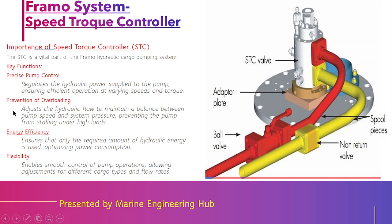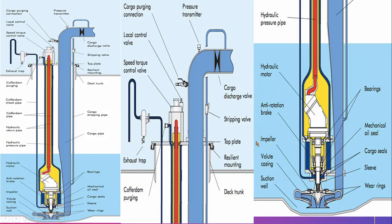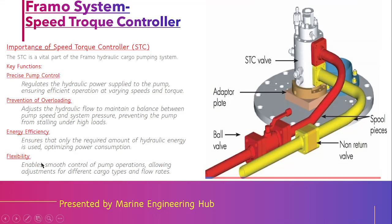The speed torque controller helps with precise pump control — it varies the speed and torque of the pump by varying the amount of oil flowing to the hydraulic motor. It also helps in prevention of overloading: it flows only the amount of oil sufficient to balance the pump and system pressure, preventing the system from stalling. It also helps in optimization of power consumption — for example, if we want to develop 5 bar from a centrifugal pump, the controller regulates the hydraulic oil flow so the motor runs at exactly the right speed.